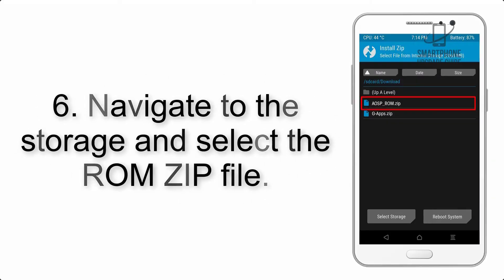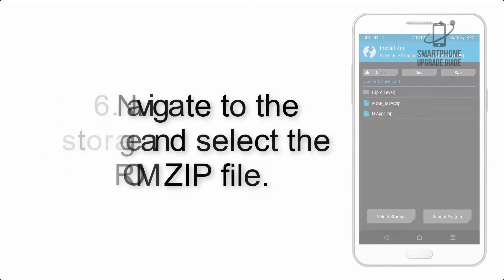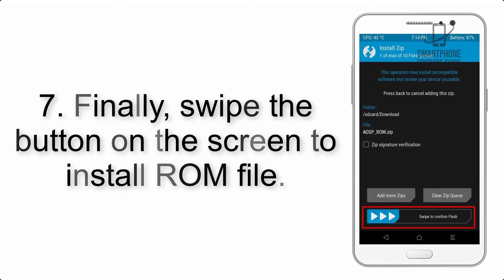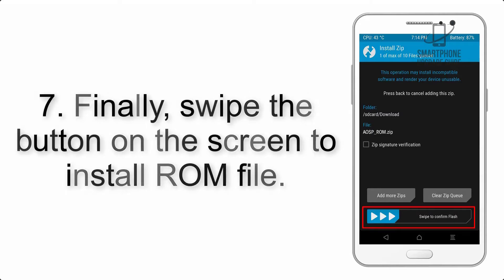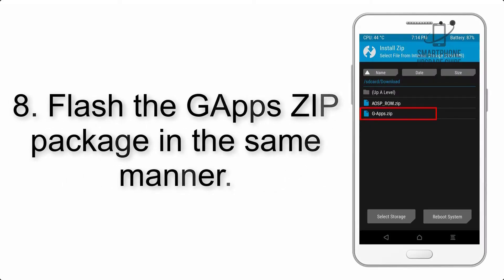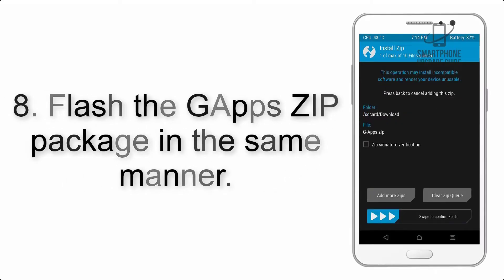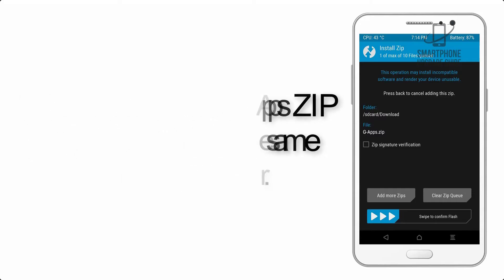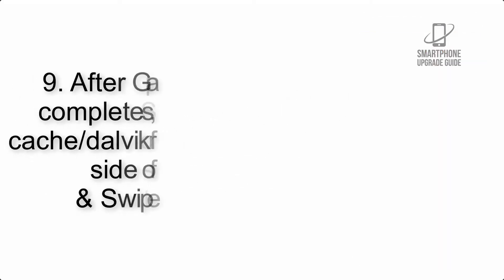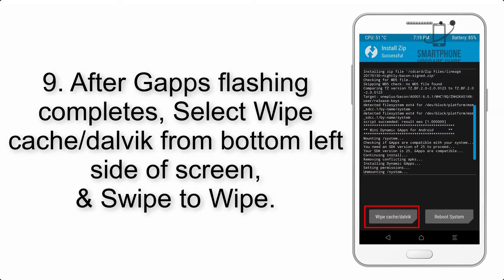Step 5: Go back to the recovery main screen and tap on the Install button. Step 6: Navigate to the storage and select the ROM zip file. Step 7: Finally, swipe the button on the screen to install the ROM file.